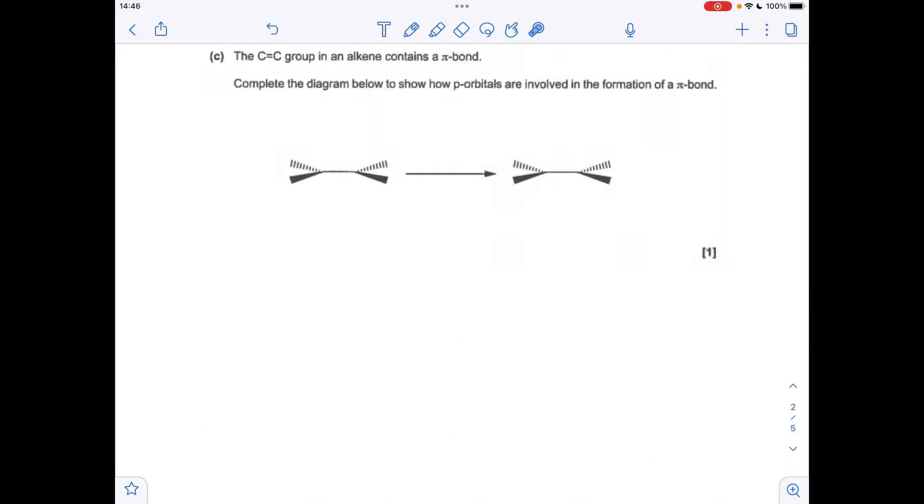Moving on to part C now, we've got to show how p-orbitals are involved in the formation of a pi bond. So on each of the carbons, there's a p orbital, so draw one there, and there's the other one there. And what these do is they overlap sort of sideways, like that, and that generates the pi bond. So you've got this region of space, which has sort of roughly that shape, above and below the plane of the carbon atoms there.